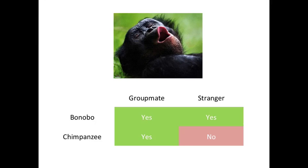This suggested to us that bonobos may be feeling a very basic form of empathy for strangers that we don't see in their close relative, the chimpanzee. When other researchers did similar research with chimpanzees, chimps did contagiously yawn for group mates, but they did not yawn for strangers. Together with their sharing behavior, bonobos seem to be attracted to strangers — the technical term is xenophilic; they really like other bonobos they haven't met before. That's very different from chimpanzees, and probably very different from humans.